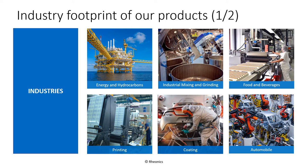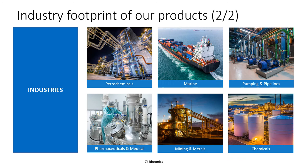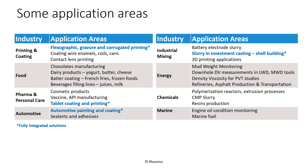Our sensors enable process monitoring and optimization across multiple industries. Whether the application needs downhole or harsh environment density and viscosity monitoring, or robust control of non-Newtonian fluids in manufacturing processes, we have a product that fits the need. Some industries where Rhionics sensors are deployed include energy, industrial grinding and mixing, food and beverage processing, printing presses, coating lines, automotive, petrochemicals, marine, pumping, pharmaceuticals, mining, and chemical industries. All these industry segments are part of the solutions database on the website, and specific applications can be found in application notes available there.